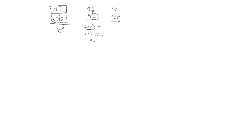Then we're going to look at the second one as 42 times 20. And if 42 times 2 is 84, we know that 42 times 20 would be 840 as our second partial product. And then to get our total product, we're going to just add those together for a total product of 924.